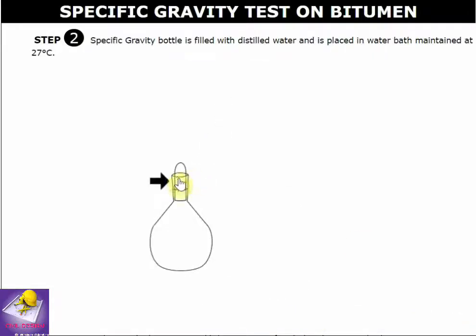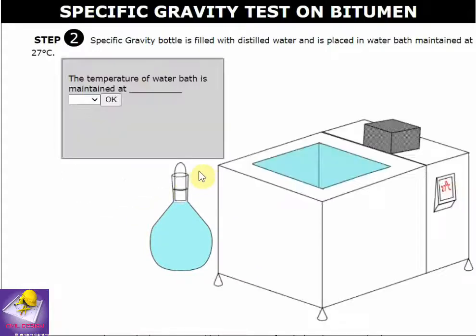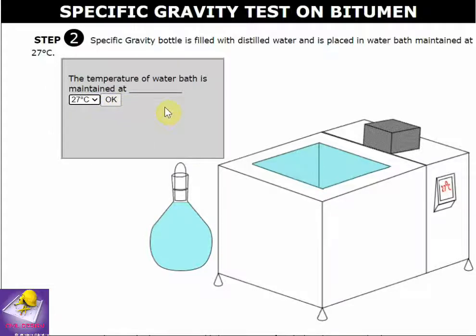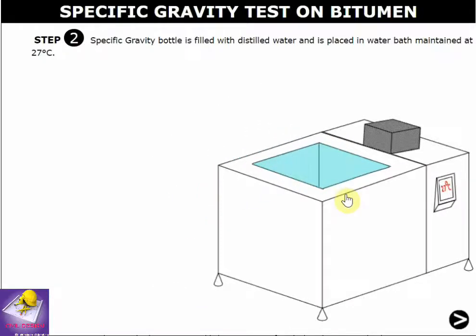Open the stopper of the bottle and fill it with distilled water, then put the stopper back. The temperature of the bath is maintained at 27 degrees Celsius, and the bottle is placed in the temperature-controlled area to rest.